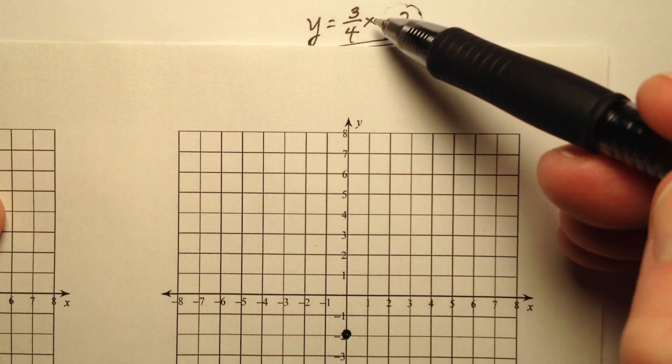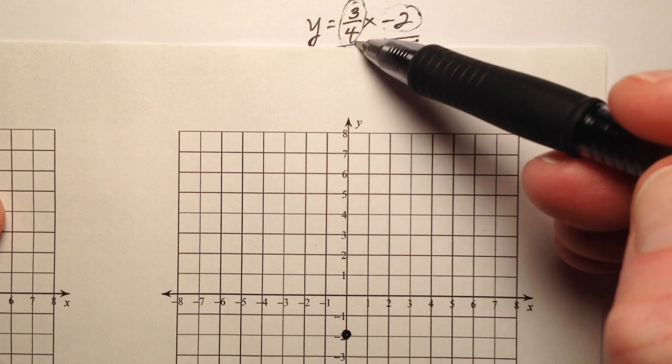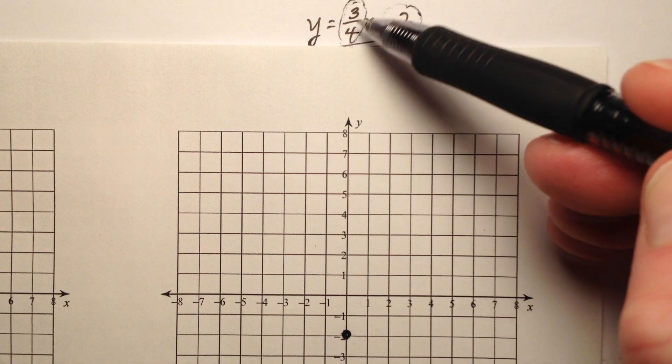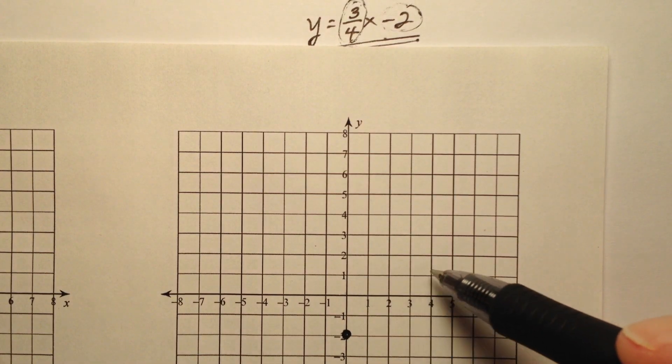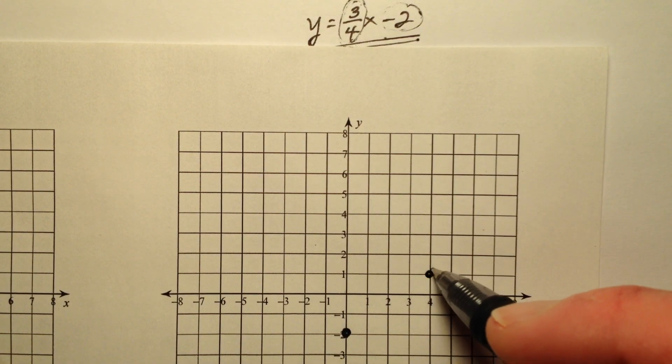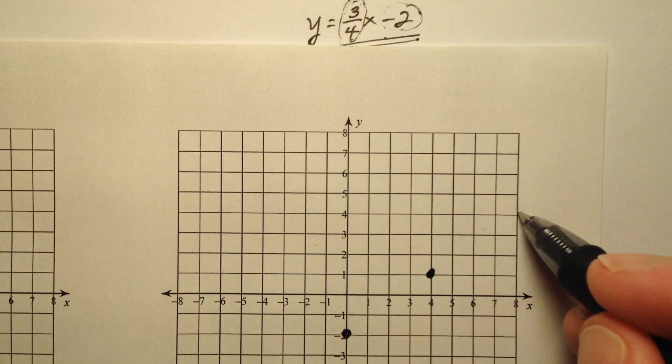And then from there I'm going to use the slope, which was 3 fourths, so positive 3 and positive 4. So rise over run means up 3 over to the right 4, because that's in the positive direction. And I can do that a couple of times.